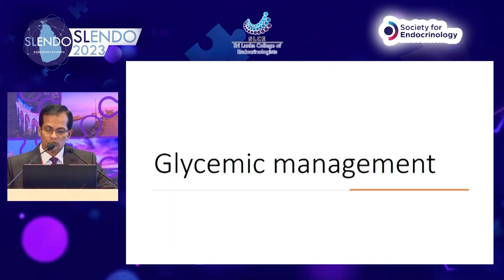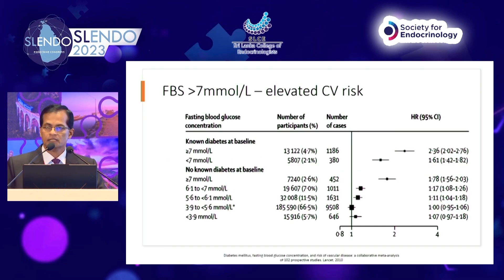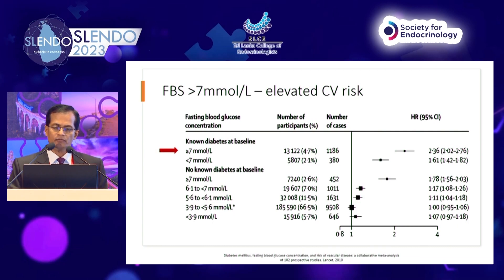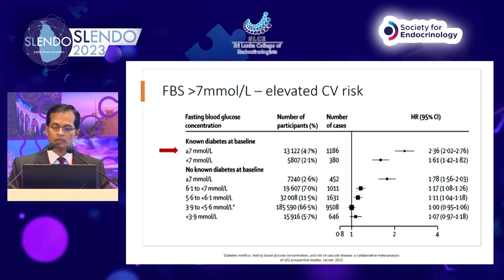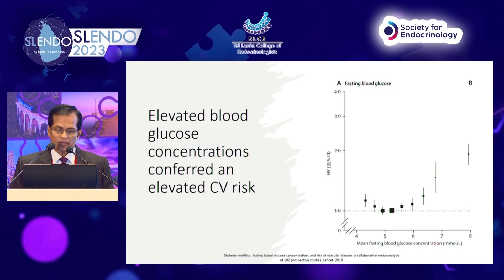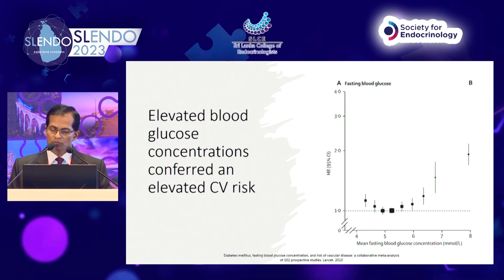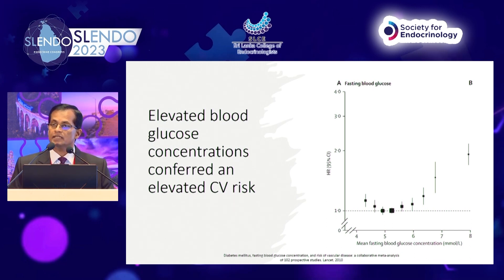Looking at glycemic management: fasting blood sugar more than 7 elevates cardiovascular risk. Comparing more than 7 versus less than 7, there are increased hazard ratios for cardiovascular outcomes with higher fasting blood sugar. If you look at elevated blood glucose against hazard ratio, there is a J-shaped curve — increasing cardiovascular risk with increasing fasting blood sugar.